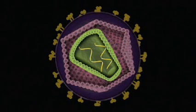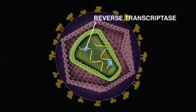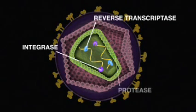The core also contains three enzymes. These molecules, called reverse transcriptase, integrase, and protease, are necessary for reproduction.